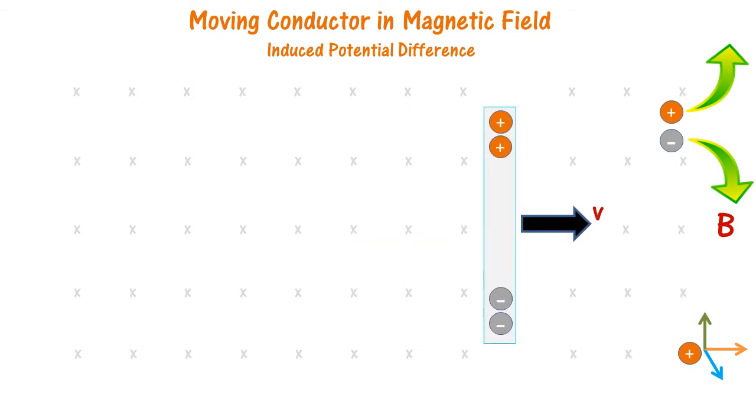So these charges get accumulated at either end of the conducting rod. One end of the conductor is now positively charged and the other end is negatively charged. So there is an induced EMF between the two ends of the conductor.